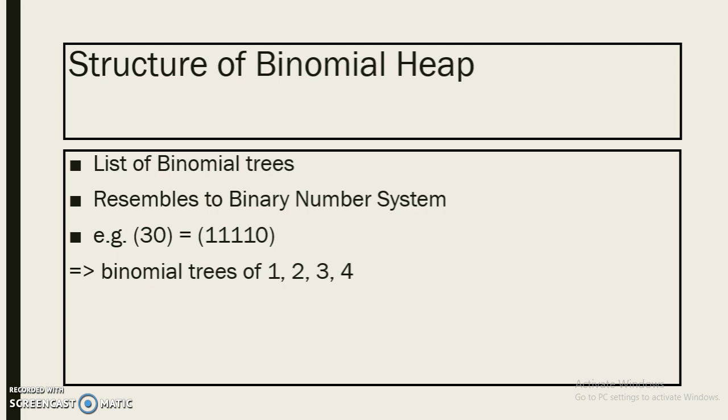30 is 4 times 1 and 0, so it will have binary trees of order 1, 2, 3, and 4. There won't be any tree of degree 0 as the least significant bit of 30 is 0.